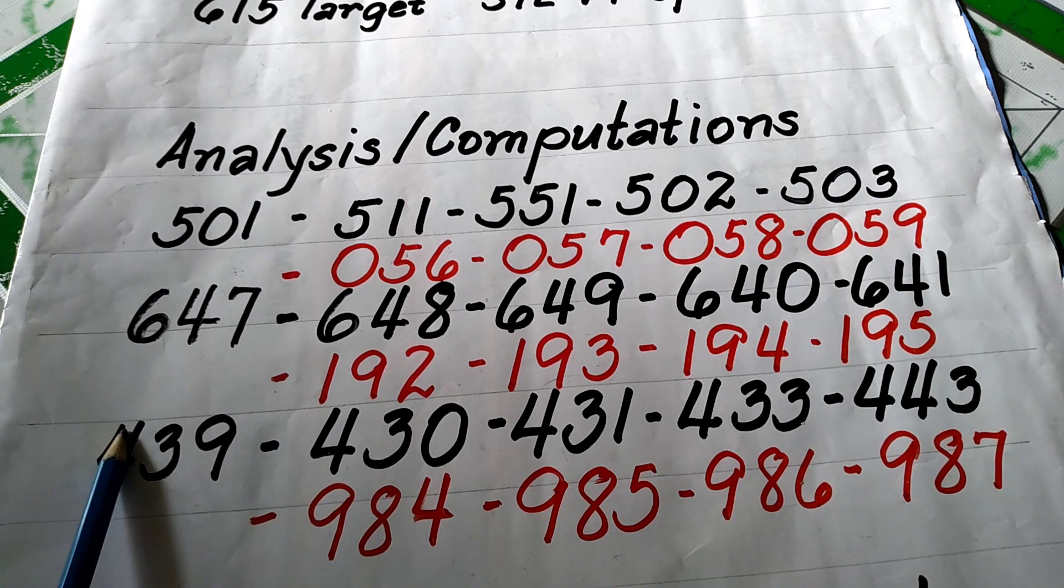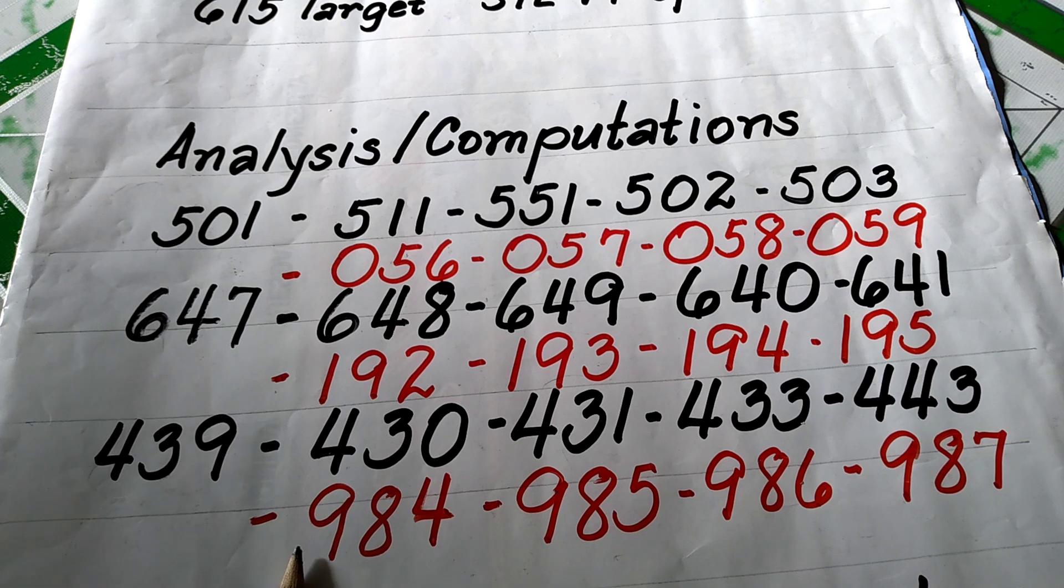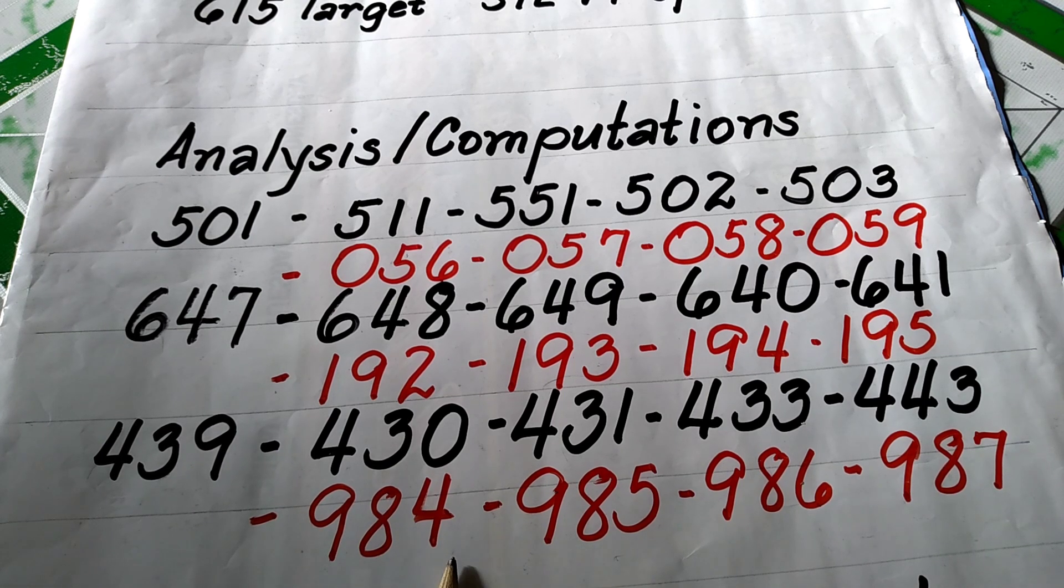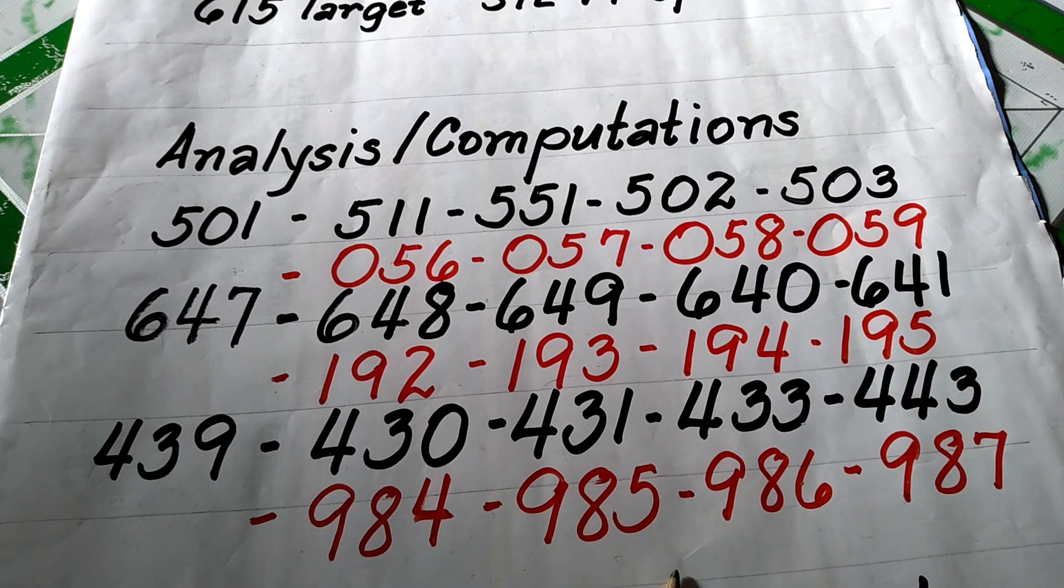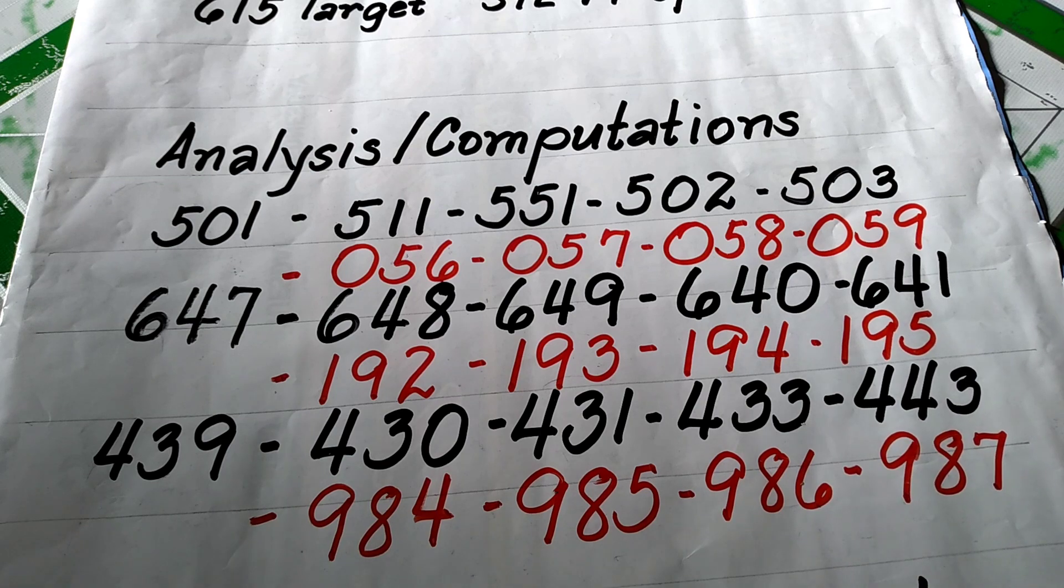Okay, so dito naman sa 4-3-9, ang numerical equivalent is 9-8-4. Maaring yung kasunod 9-8-5, 9-8-6 o di kaya 9-8-7.